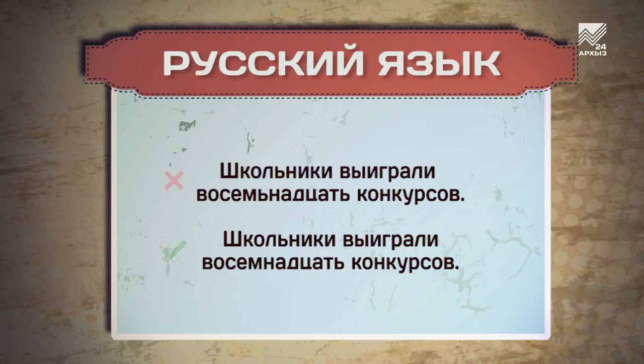Школьники выиграли 18 конкурсов. В сложных числительных от 15 до 19 мягкий знак в середине не пишется — никогда. А вот в числительных на 10, от 50 до 80 и на 100, от 500 до 900, наоборот, в середине ставим мягкий знак. Будет не «50» без мягкого знака, а «50» с мягким знаком.